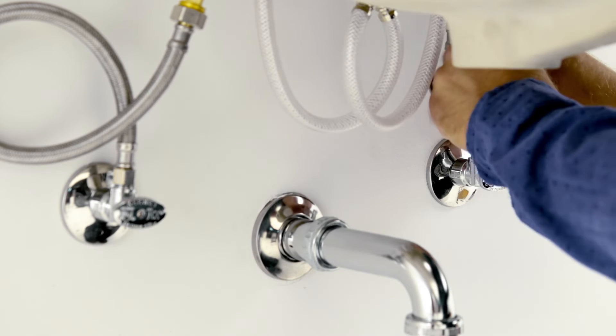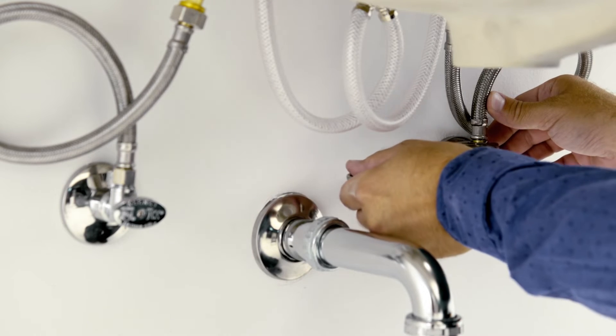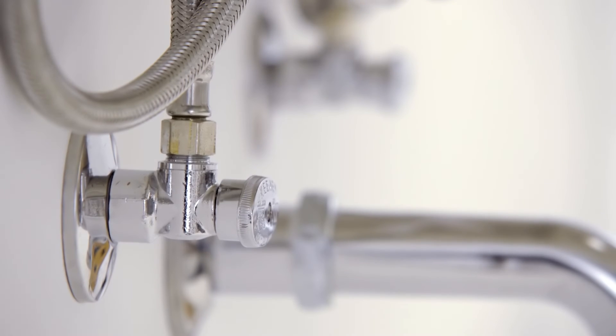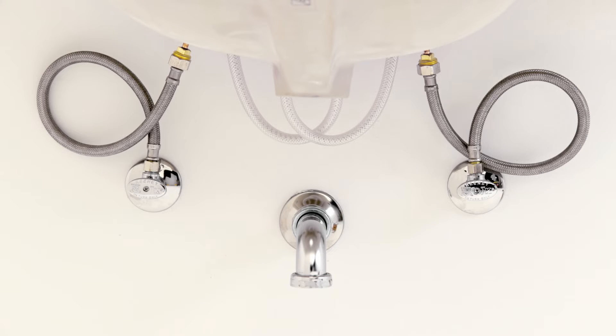Repeat for the other hose connection. Make sure that the hose with the hot label is connected to the hot supply valve and the other hose is connected to the cold supply valve.